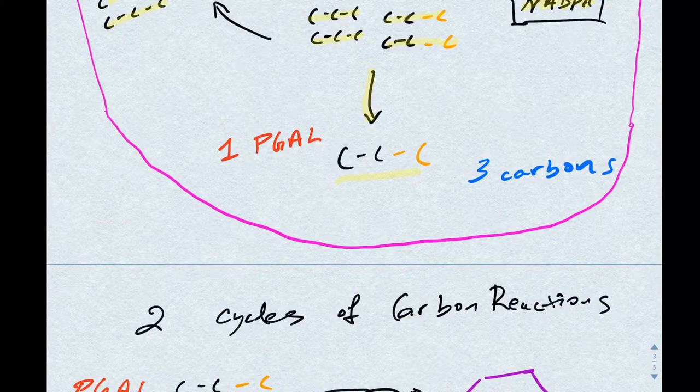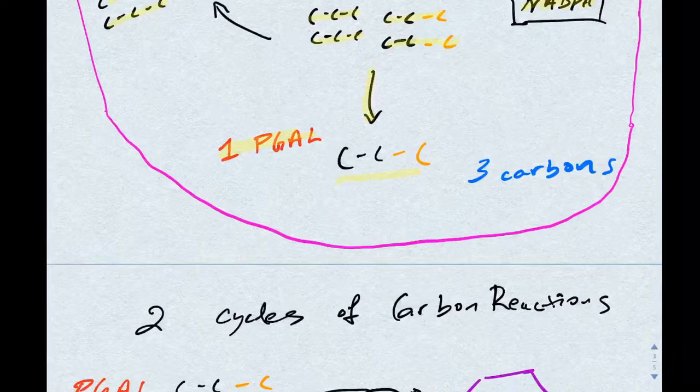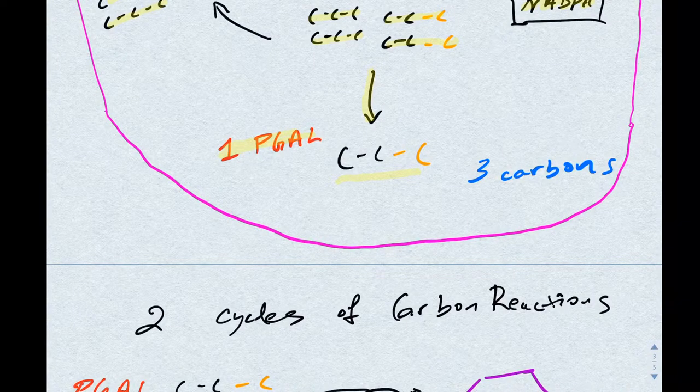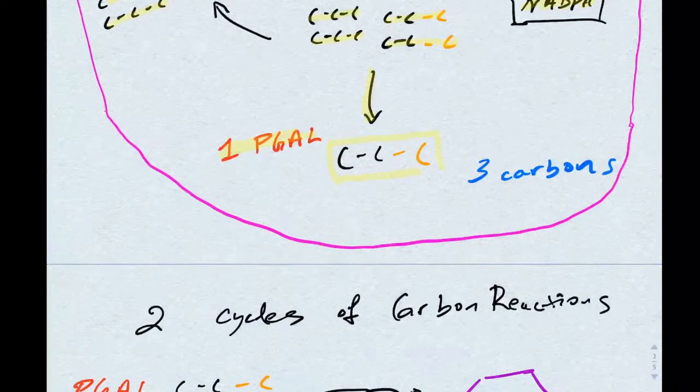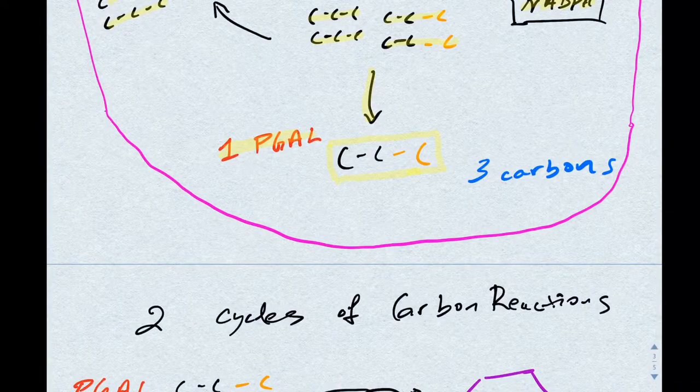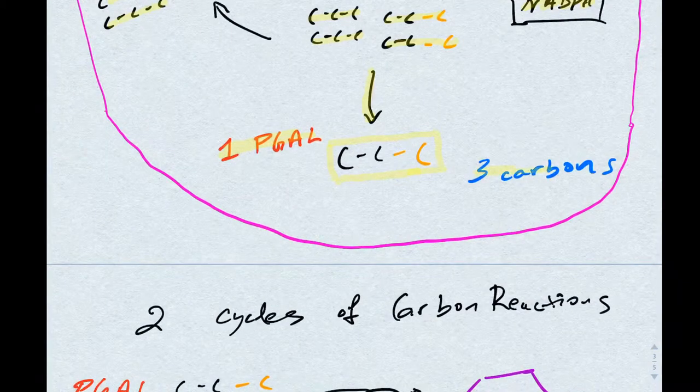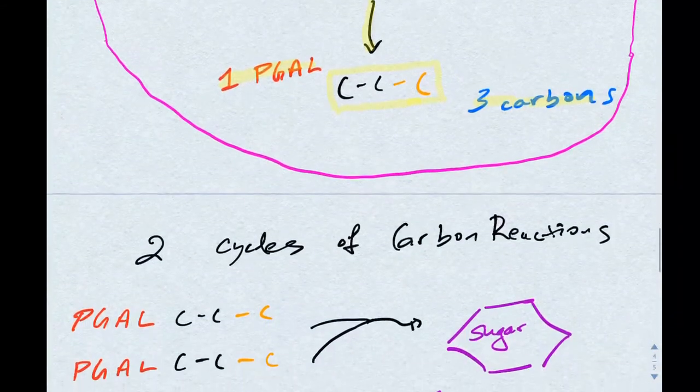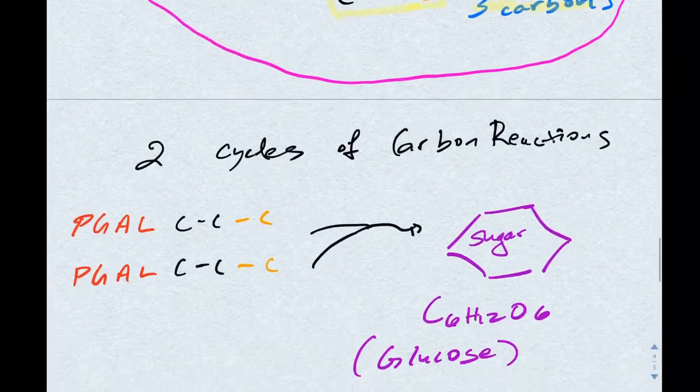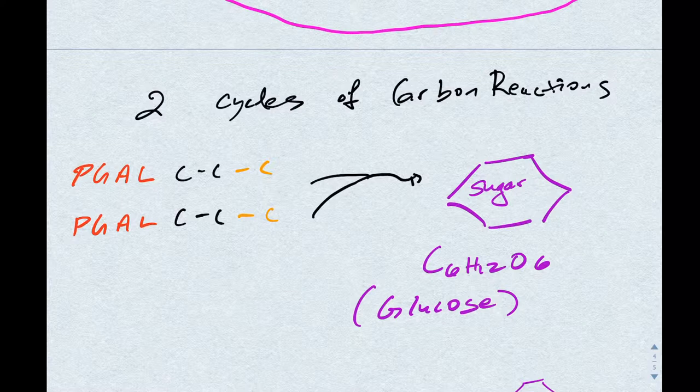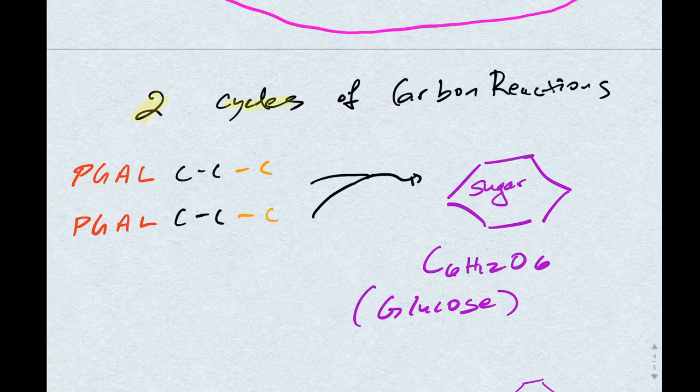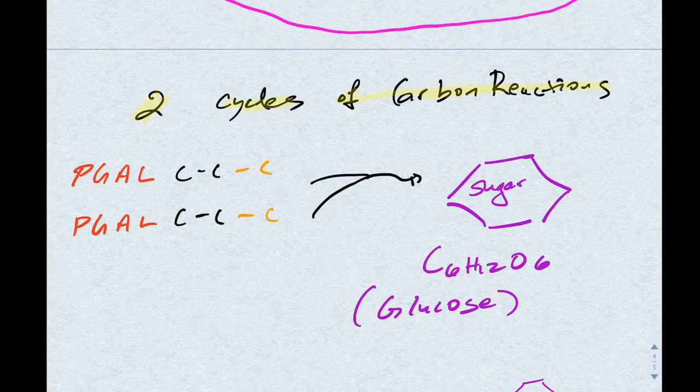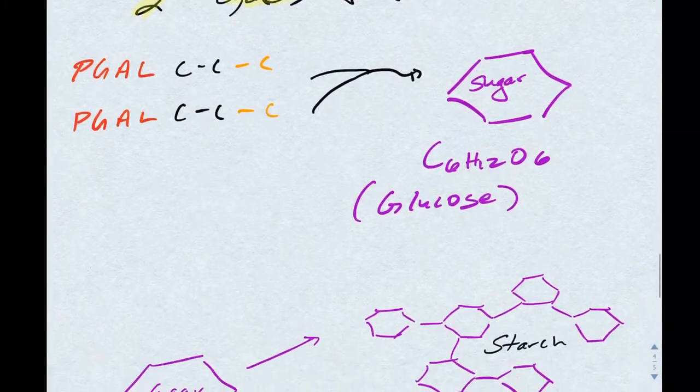At this point, we need to follow what happens to that one PGAL that exits the carbon reactions. Now realize it has three carbons. To make glucose, we need six carbons. So these three carbons will not be enough to make a glucose molecule. That means that we need to do two cycles of carbon reactions in order to get the six carbons to make glucose. And that's exactly what happens.